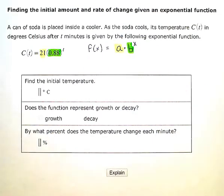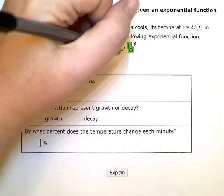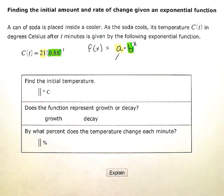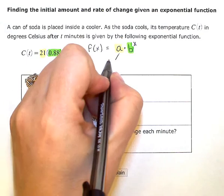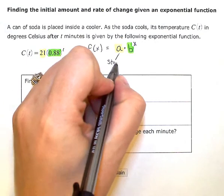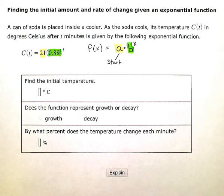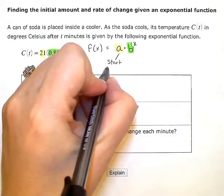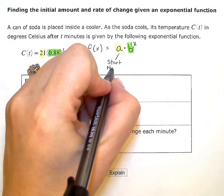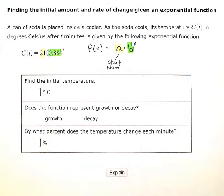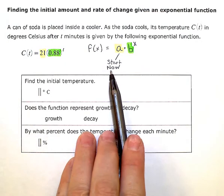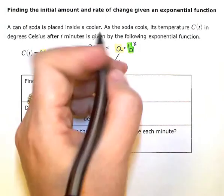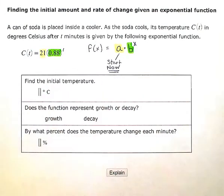Now this number, the one without the exponent in our equation represents, sometimes it's referred to as the start value or the beginning value, the initial value, the current temperature. Basically, it's the now number.